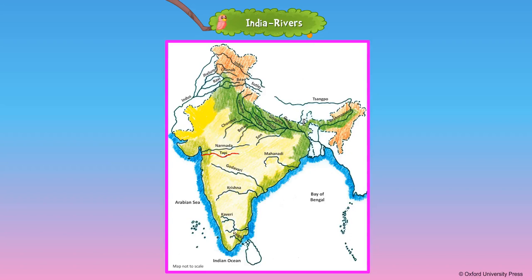The Tapti drains into the Arabian Sea. The Mahanadi flows through Madhya Pradesh, Chhattisgarh, and Odisha. The Godavari starts from the Western Ghats and flows through Maharashtra, Telangana, and Andhra Pradesh.